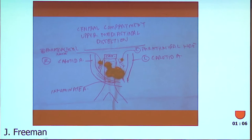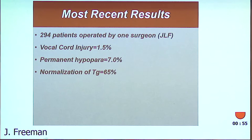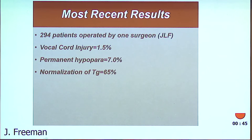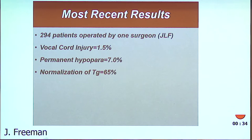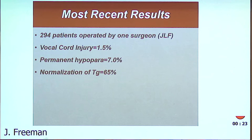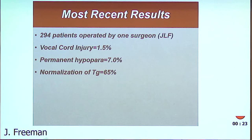Here's the pathology specimen: the central compartment with two lateral nodes to the recurrent laryngeal nerve shown on a cartoon. I've done 294 of these cases myself. Our vocal cord injury rate is 1.5%, which I think is pretty good keeping in mind this is a revision procedure — some are second, third, or fourth revisions. Permanent hypoparathyroidism is about 7%, and many of these cases already came with permanent hypoparathyroidism. Importantly, we normalize thyroglobulin in 65% of patients — audited at arm's length, not fudged — and I think that's pretty good considering the severity of this disease.